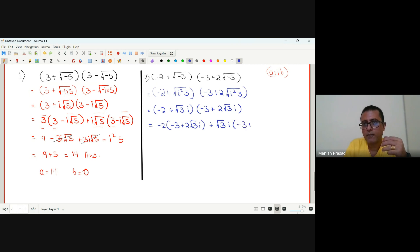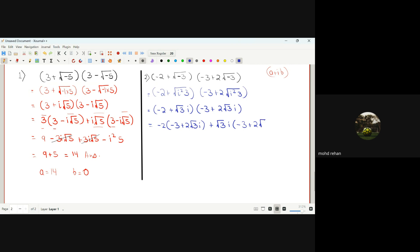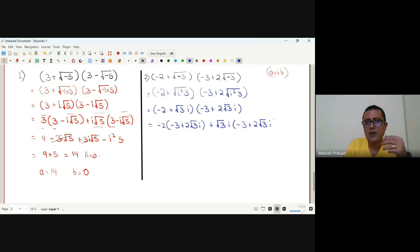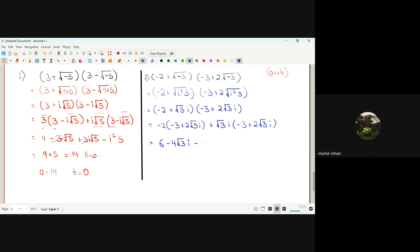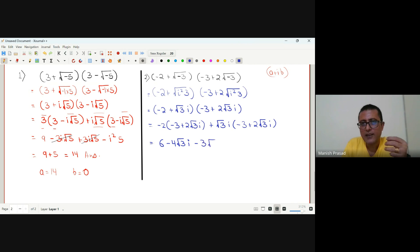Okay, now negative into negative is positive 6. Negative into positive: negative 2 twos of 4 root 3 i, then minus 7. So dhyan dena hai positive negative